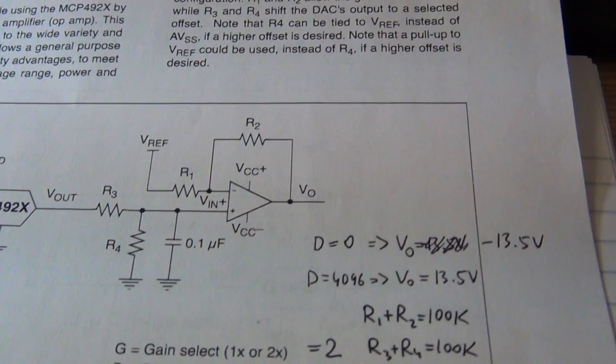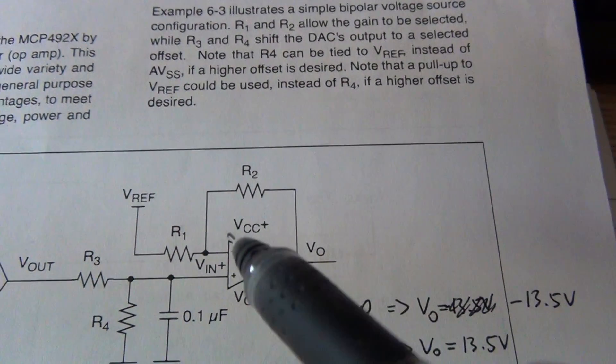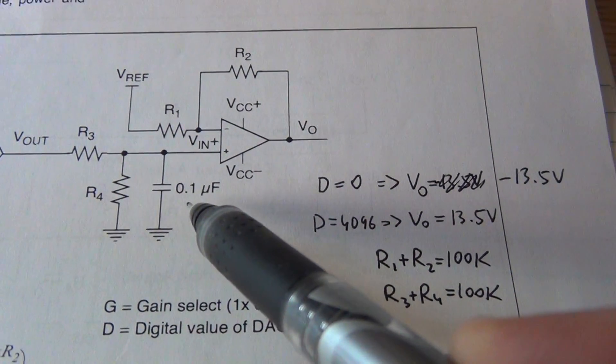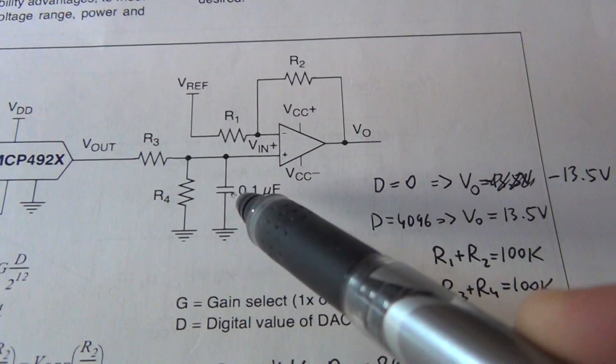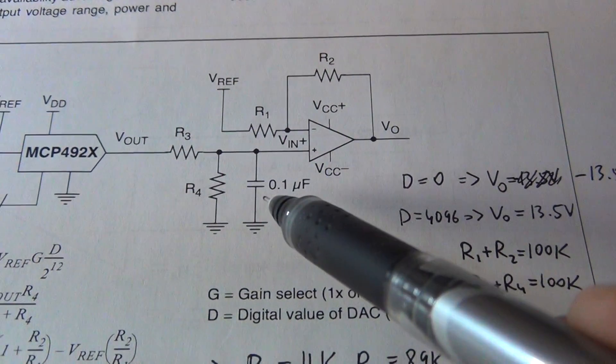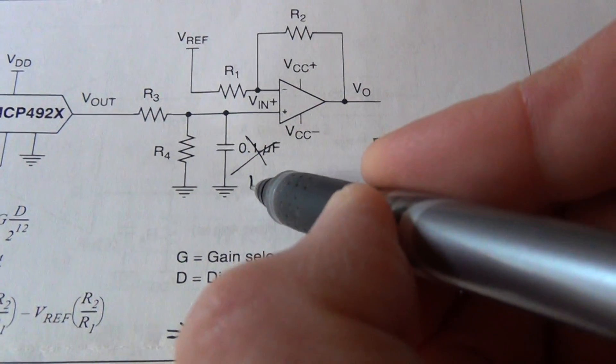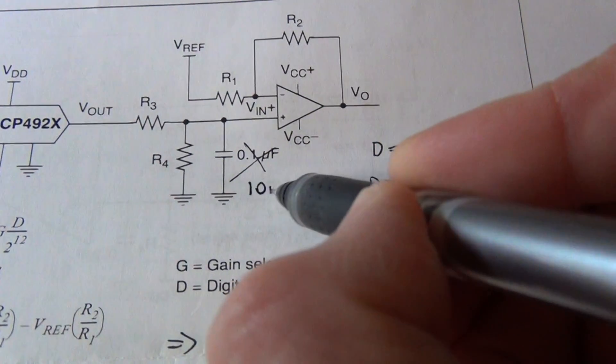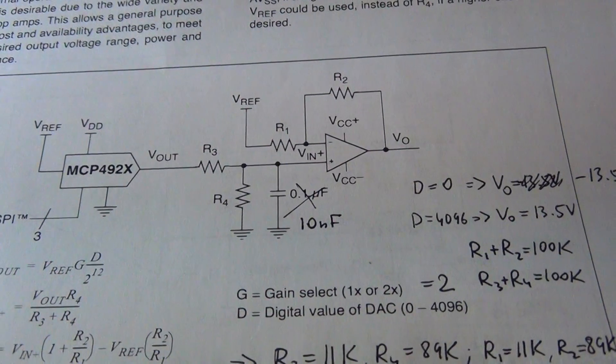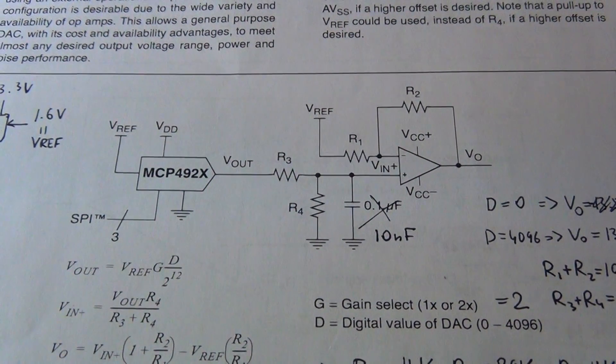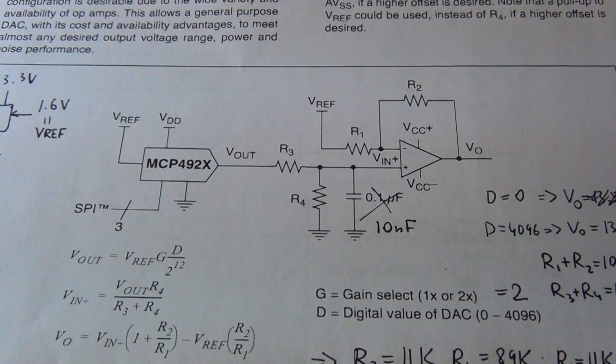Now, these values for resistors are pretty high. And so the capacitor that is smoothing out the output of the DAC will have to be reduced for our purposes. So instead of 0.1 microfarad we will use 10 nanofarad capacitor, so 10 times smaller. And that's about it. That's the schematic that we just need to implement and test it out.